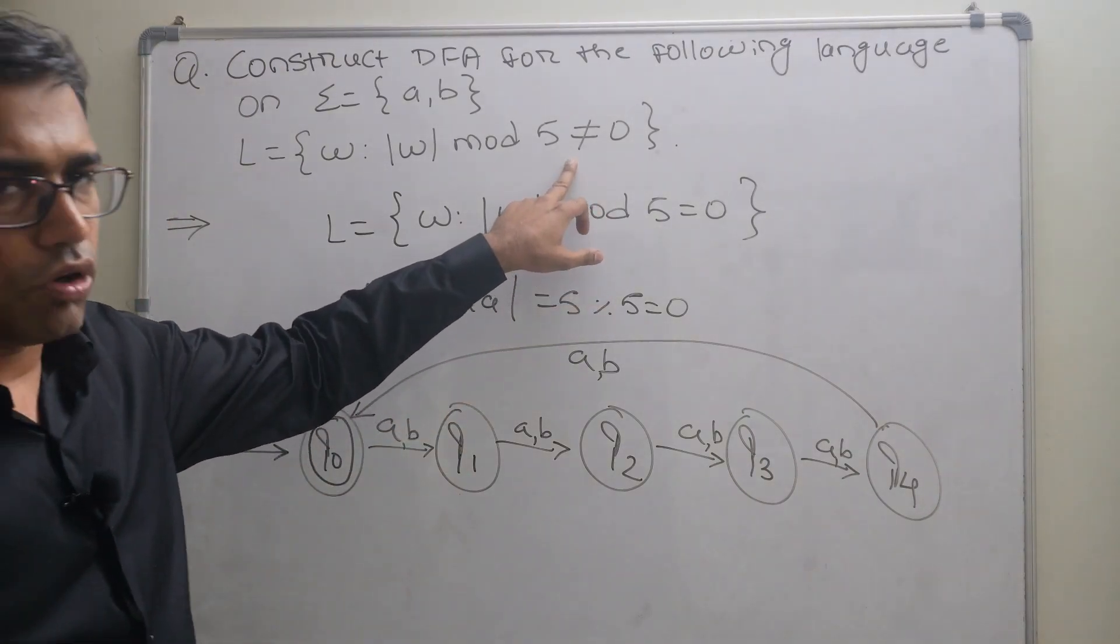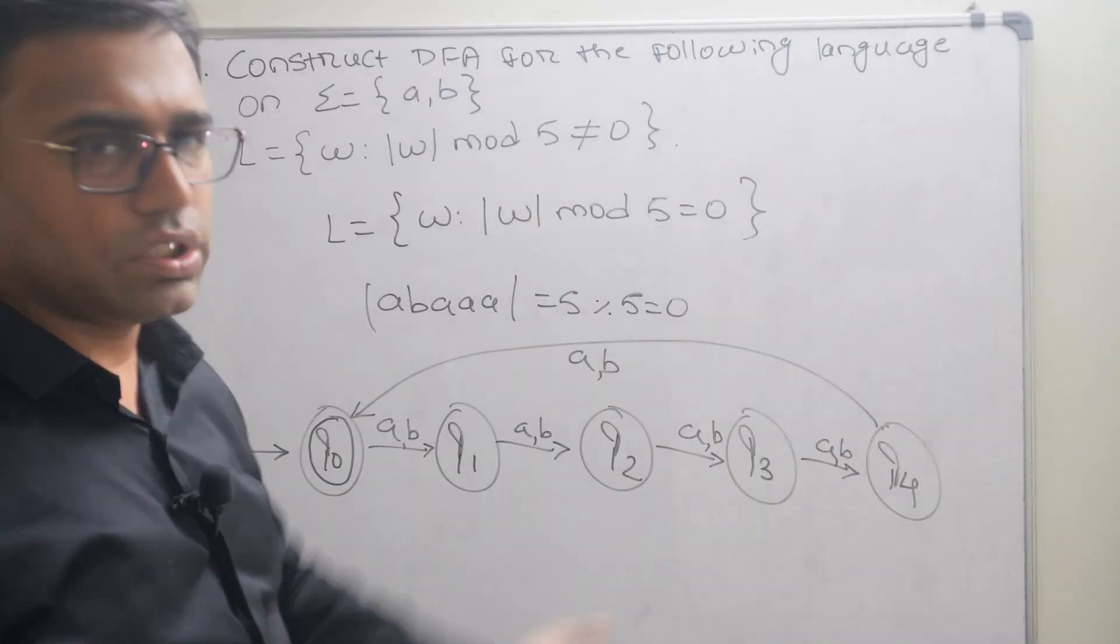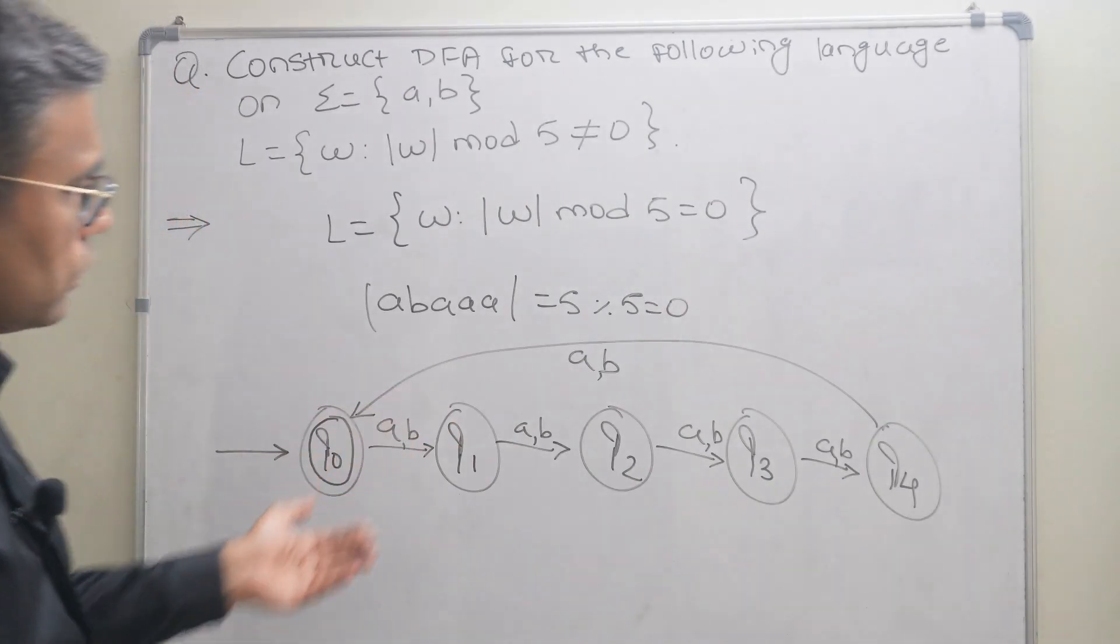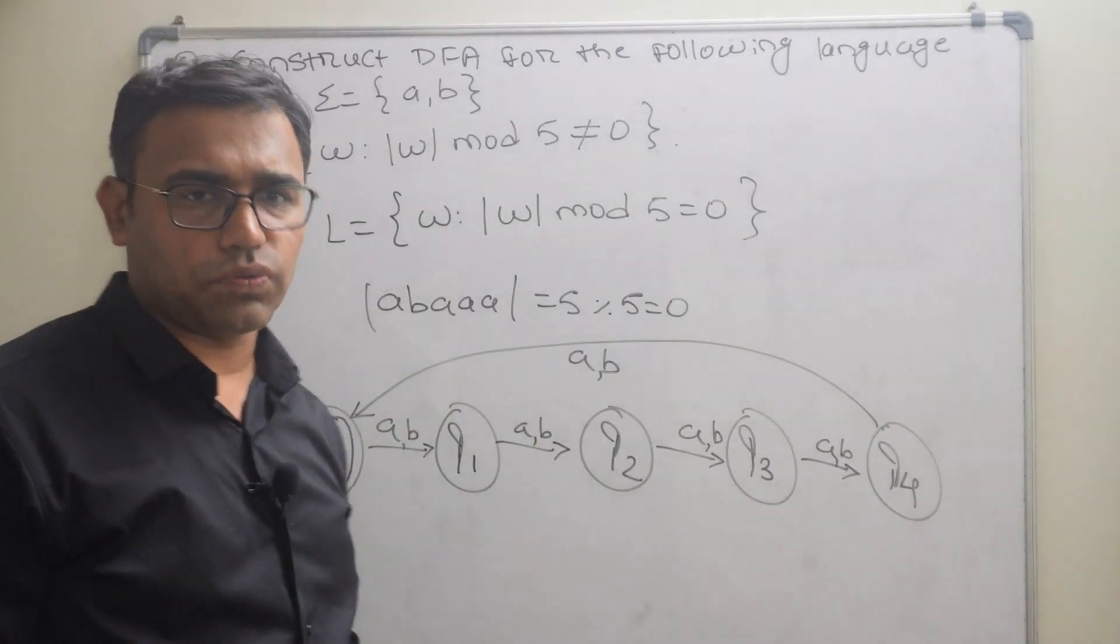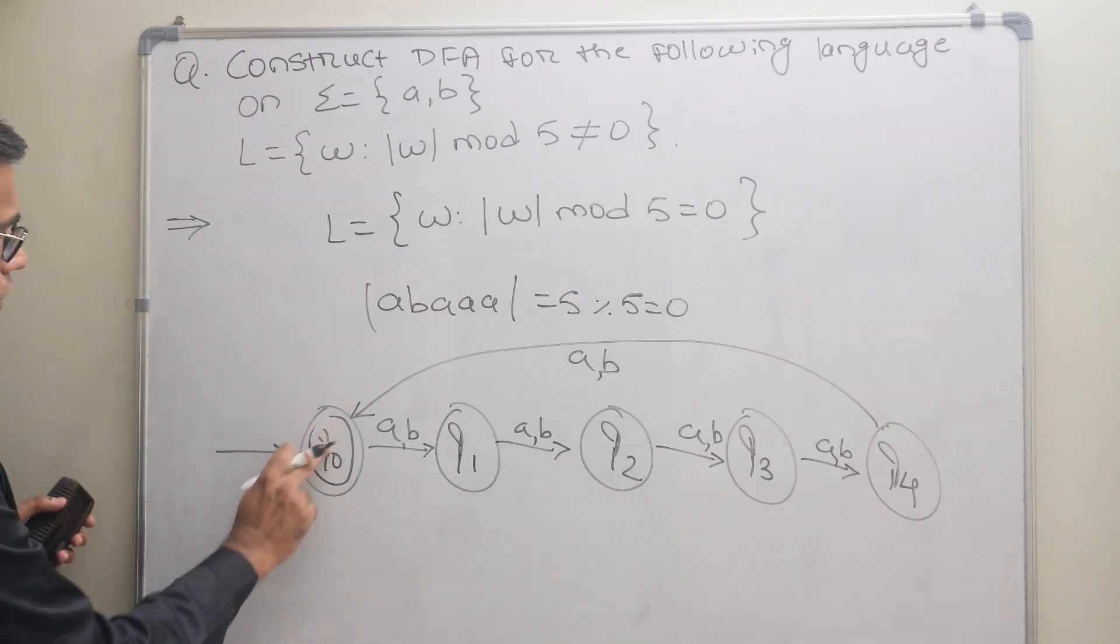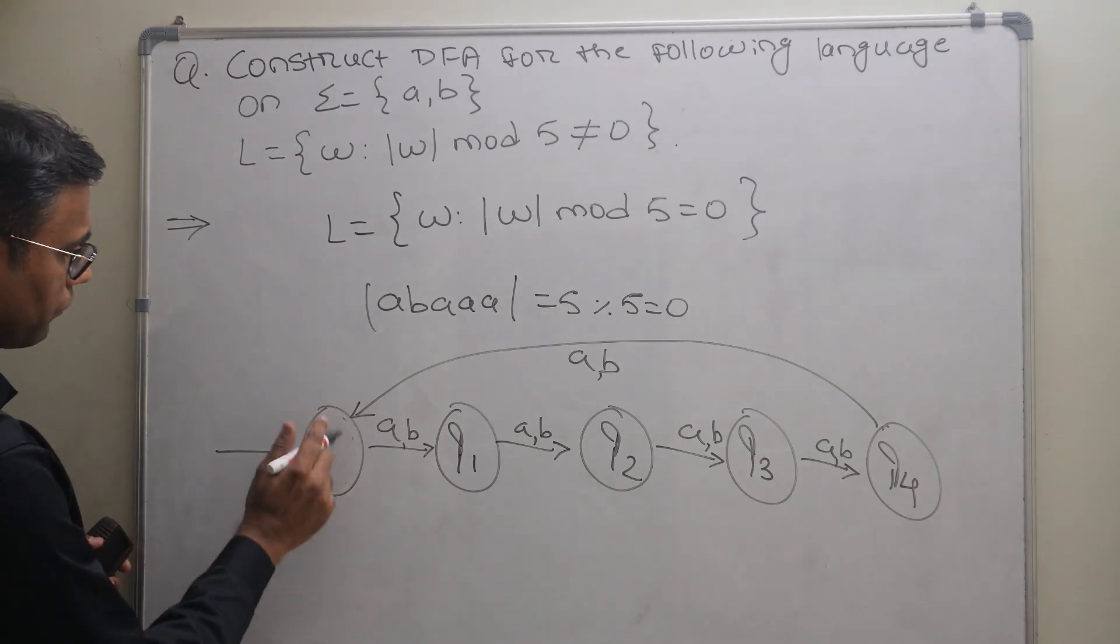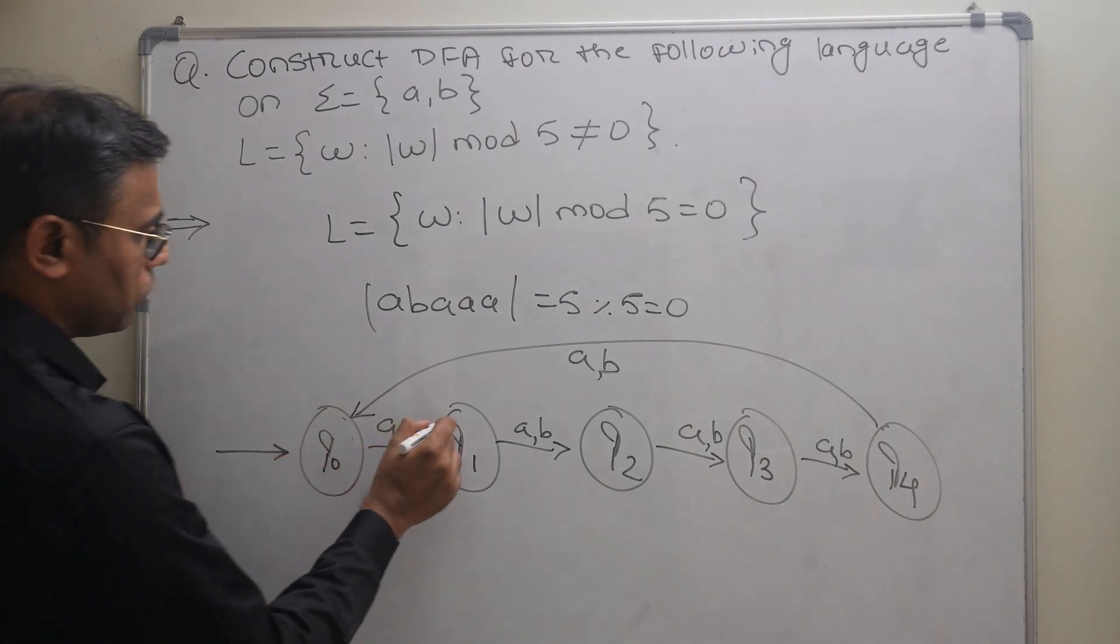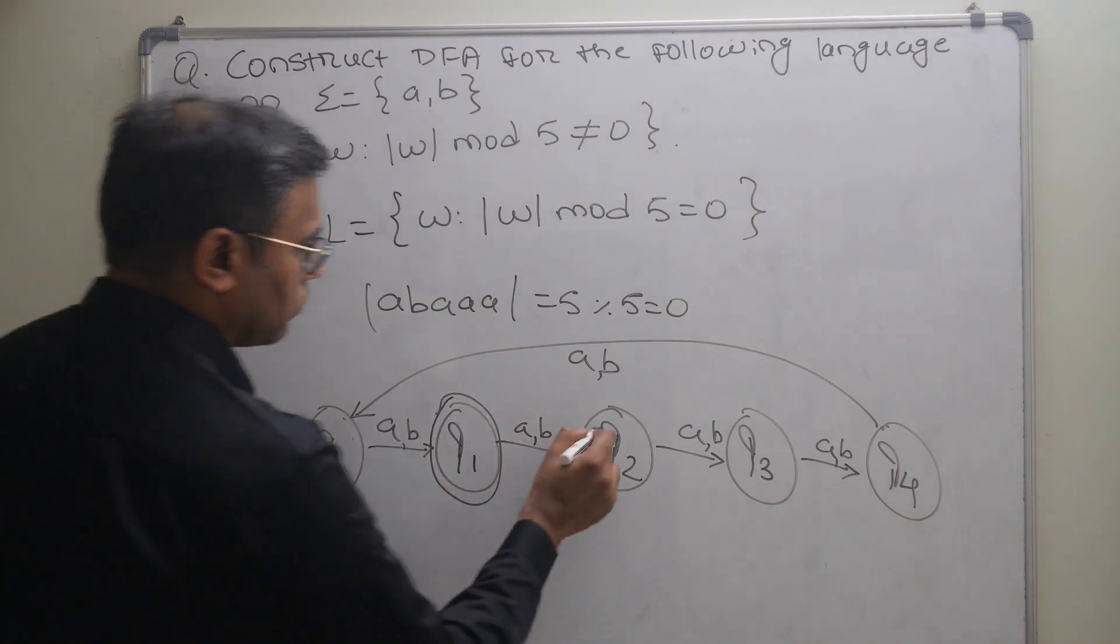|w| mod 5 not equal to 0. We have found out mod 5 equal to 0, so we have to actually negate it. How to do negation? We have to convert final into non-final and non-final into final. So q0 is final state; now it will be non-final state, and rest all will be the final states.